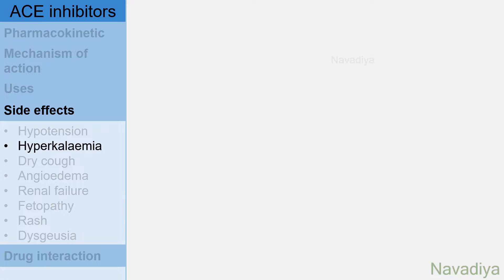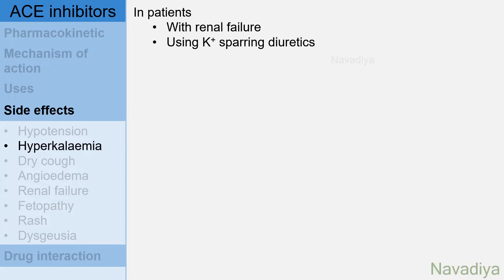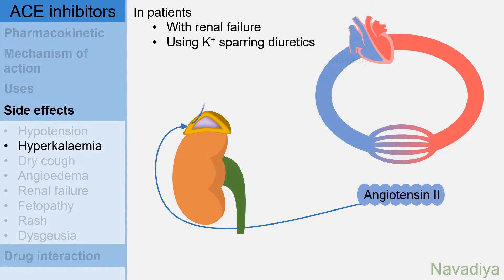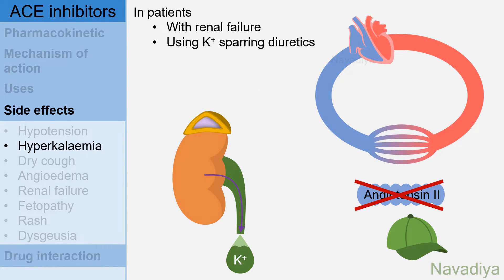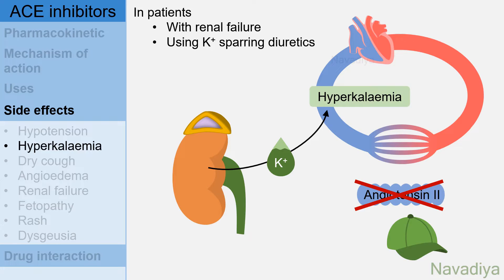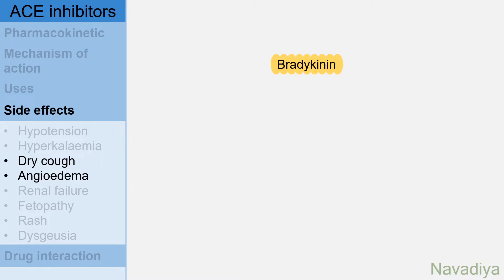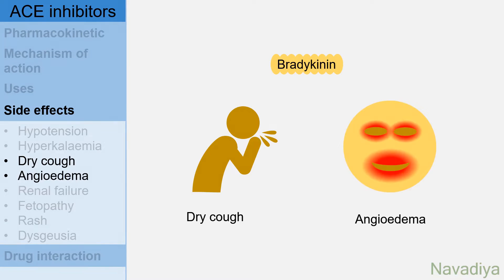Next side effect is hyperkalemia. It is seen in patients with renal failure and those using potassium-sparing diuretics. We have seen that angiotensin causes release of aldosterone which acts on kidney and increases potassium excretion. With ACE inhibitors there is no angiotensin, so aldosterone secretion reduces, and now potassium instead of being excreted is reabsorbed, resulting in hyperkalemia.